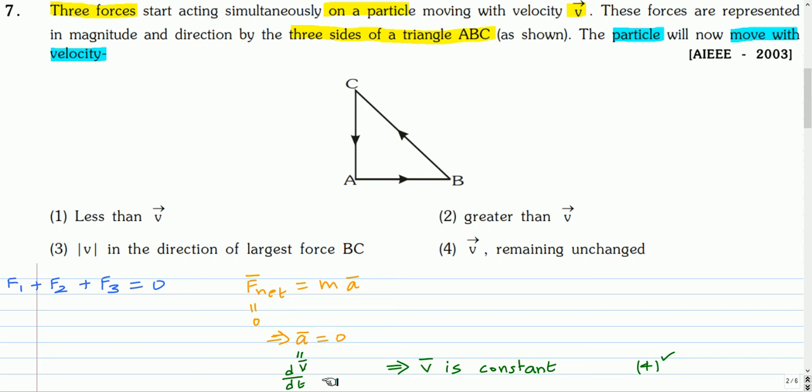you get the acceleration acting on the particle is 0. And acceleration is rate of change of velocity, and since the rate of change of velocity is 0, it means that the velocity is constant. So the correct option is option D, option 4.